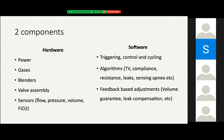Basically any ventilator has two components: the hardware part and the software part. The hardware part includes power, gases, the blenders which mix the gases, the valve assemblies which regulate the pressures, and the sensors which sense the flow, pressure, volume, and FiO2.